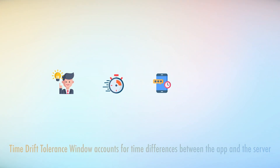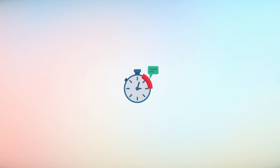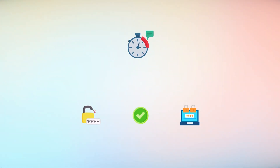During the authentication process, users are prompted to enter the OTP generated by their Authenticator app, along with their regular username and password. Simultaneously, the server hosting the user's account calculates its own expected OTP based on the shared secret key and the current time. An important concept here is the involvement of a time-drift tolerance window to account for any time differences between the Authenticator app and the server. This cushion window allows OTPs generated within a certain time frame before or after the expected OTP to be considered valid, ensuring a smooth authentication experience.